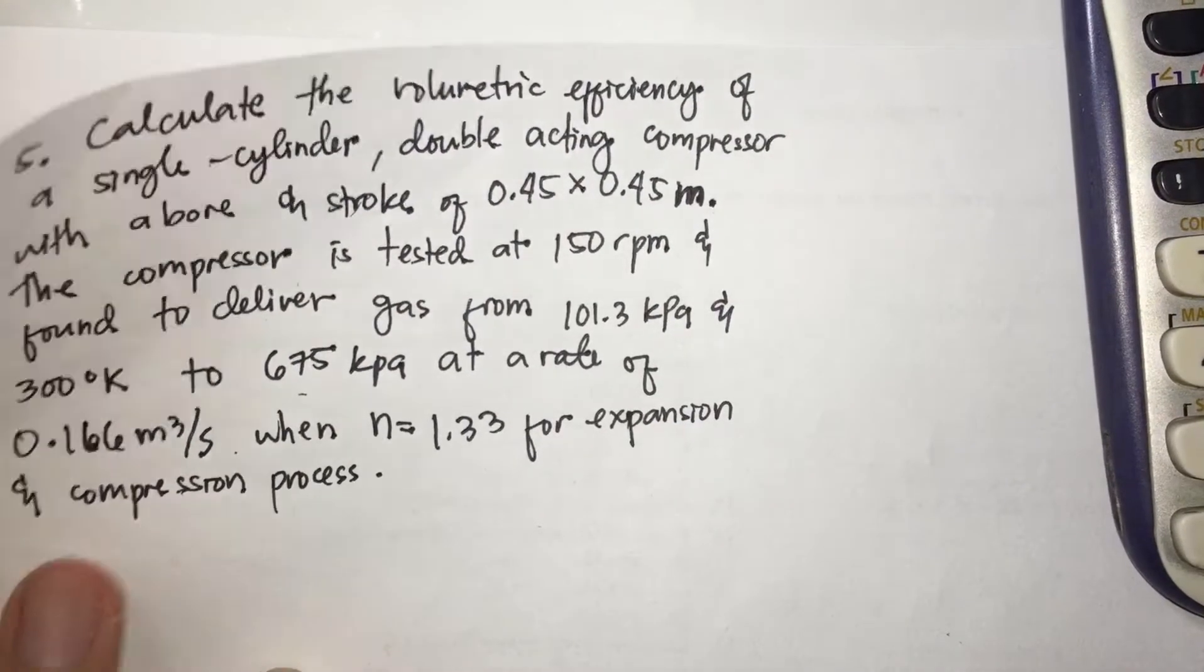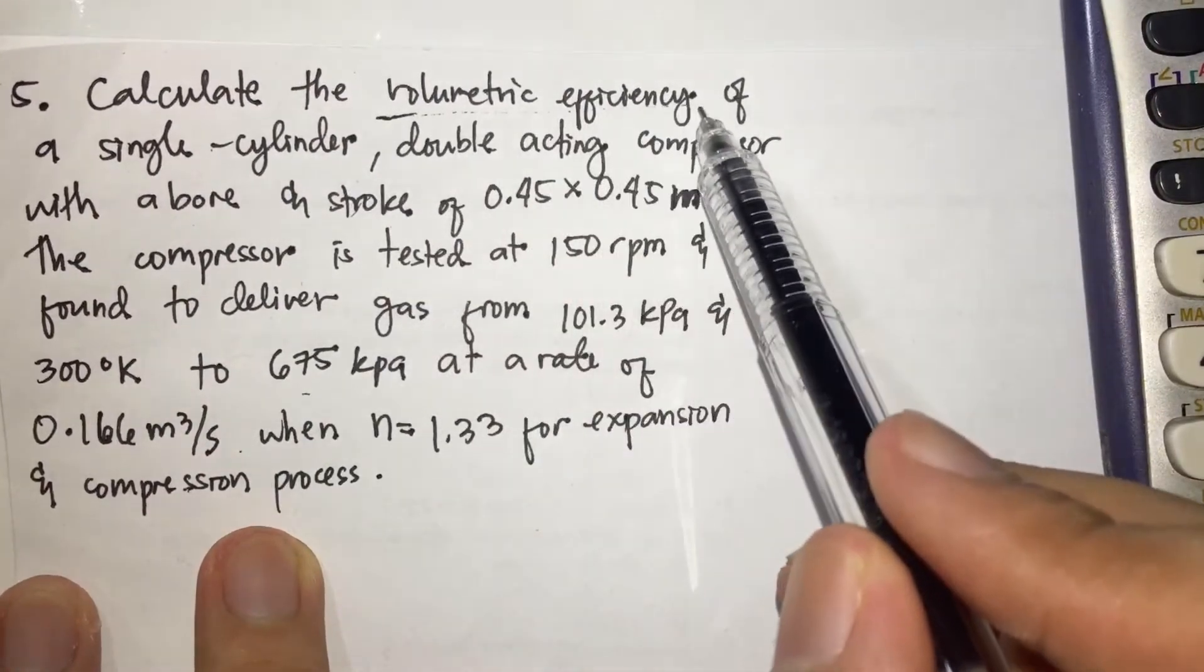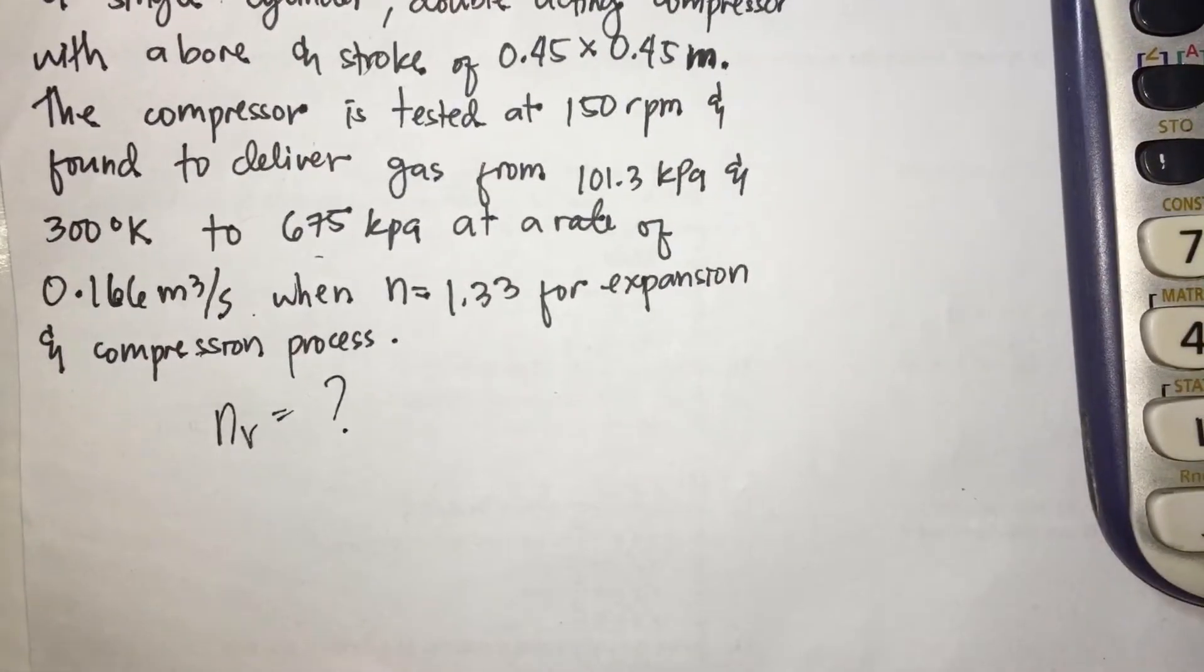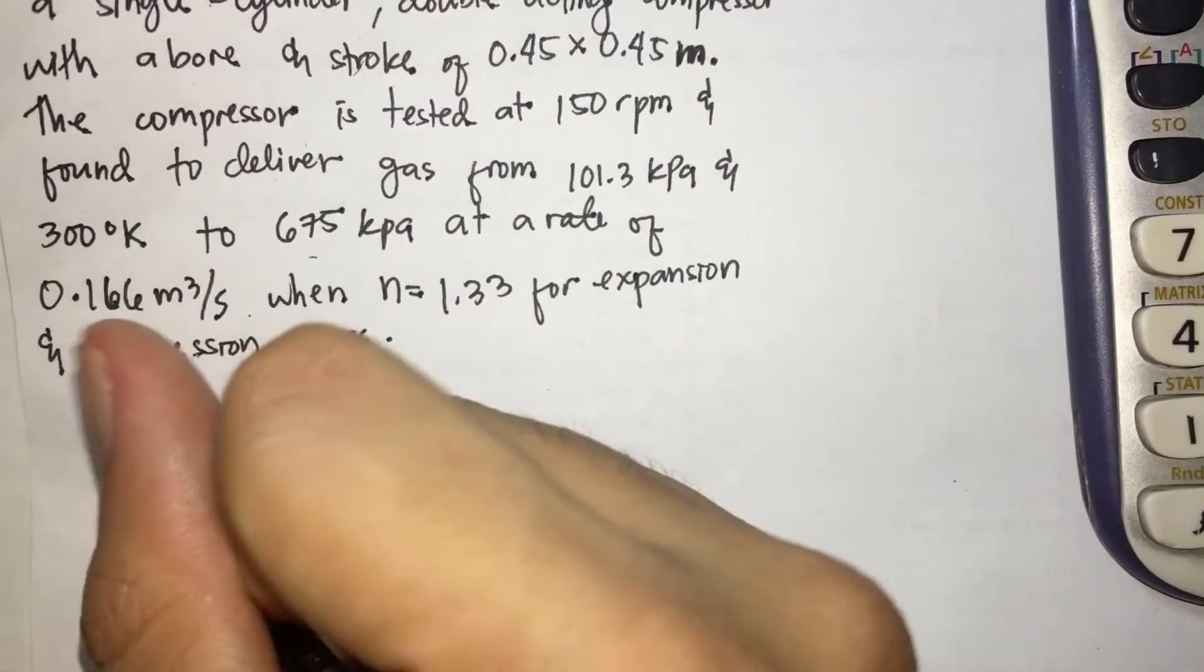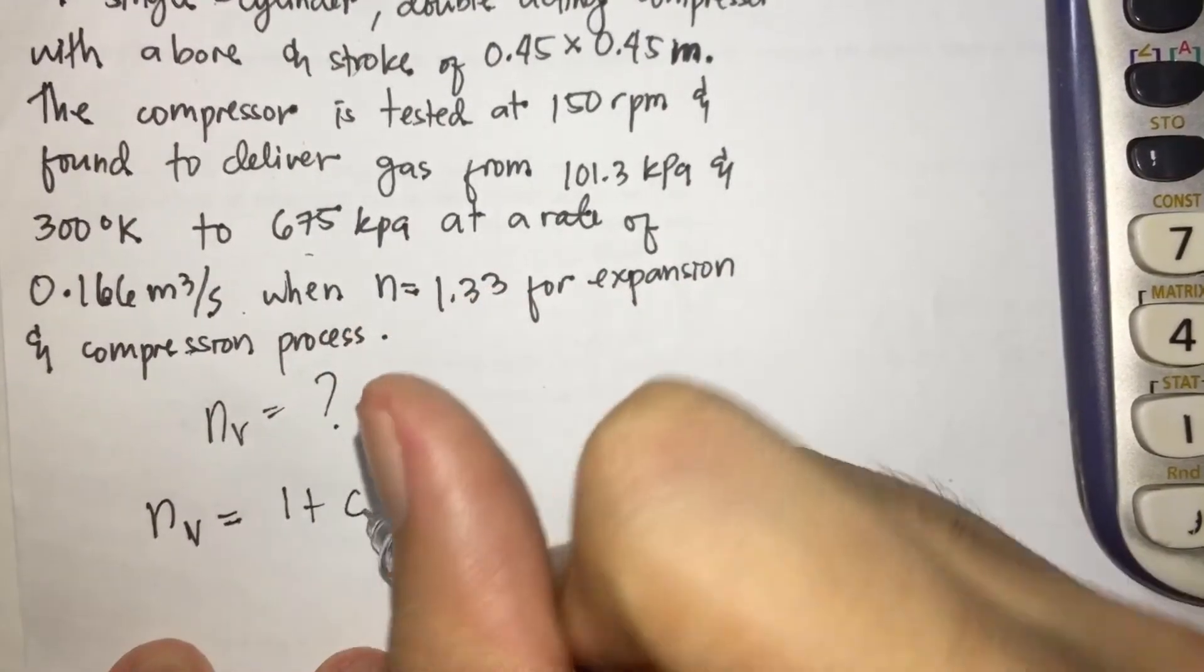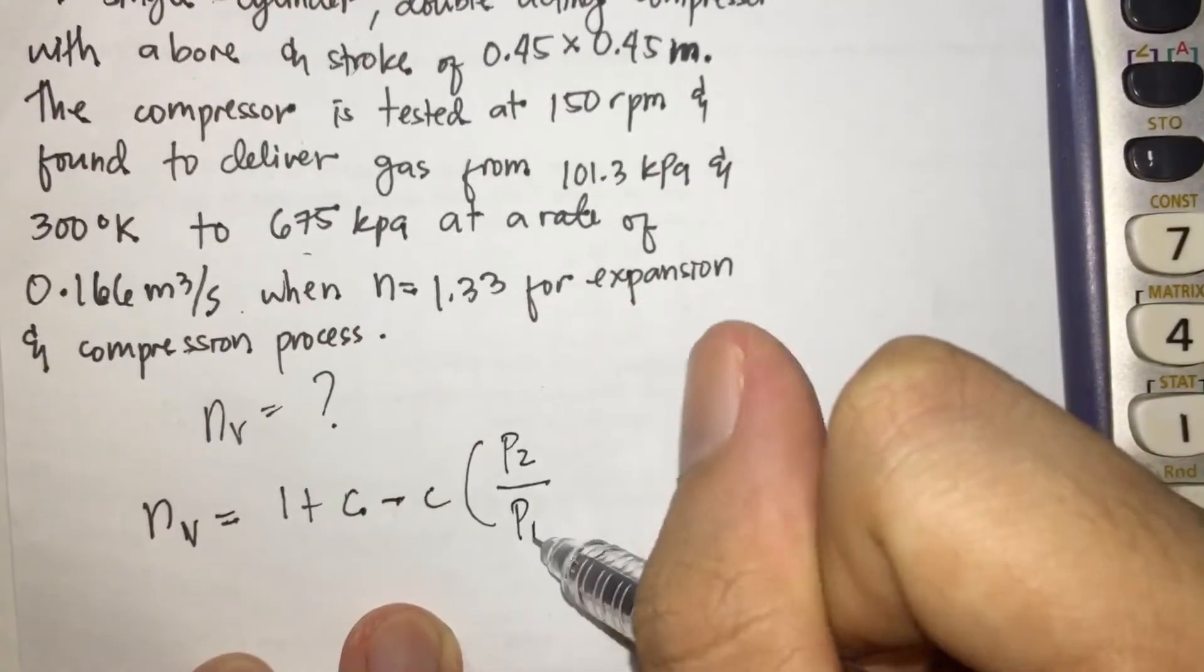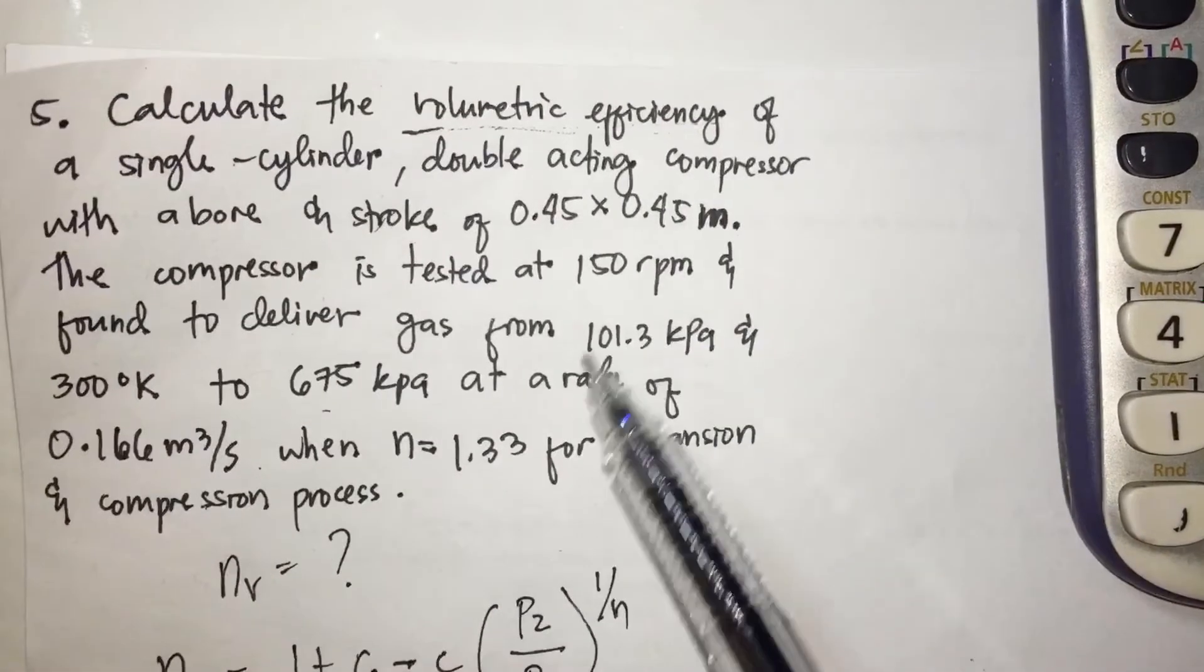So, given this, what are we looking for? Calculate the volumetric efficiency. So NV. What's our formula for volumetric efficiency? We have two formulas. The first one is volumetric efficiency equals 1 plus C, clearance percent, minus C times P2 over P1 raised to 1 over N. But there's no given clearance.